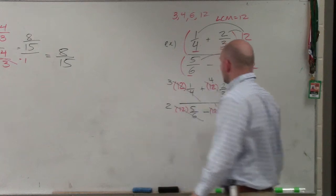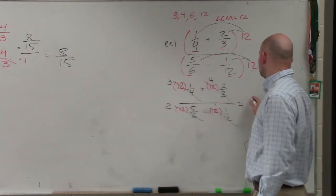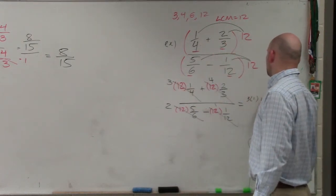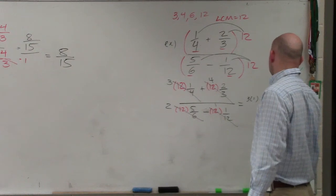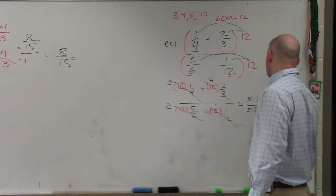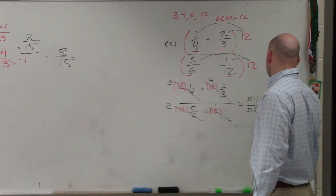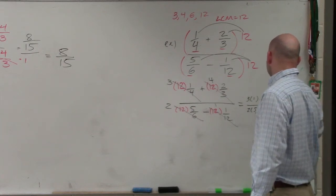So therefore, I'm now left with 3 times 1 plus 4 times 2 all over 2 times 5 minus 1 times 1.